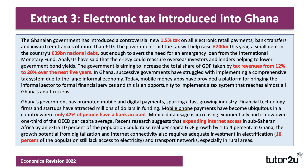The Ghanaian government aims to increase the total share of GDP taken by tax from 12% to 20% over the next five years. They think the tax burden in Ghana is too low and they need to lift the tax take. In Ghana, successive governments have struggled with implementing a comprehensive tax system due to the large informal economy. Mobile money apps provided a platform for bringing the informal sector to formal financial services, and the government thinks this is an opportunity to implement a tax system which covers all Ghana's adult citizens.